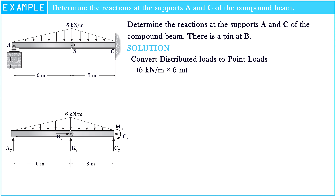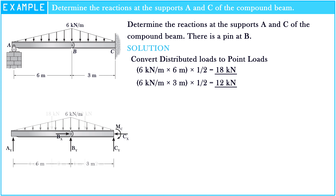6 kN per meter multiplied by 6 meters multiplied by one-half is equal to 18 kN. 6 kN per meter multiplied by 3 meters multiplied by one-half is equal to 12 kN. As we know from the effective force and load centroid of the triangular distribution loads, the point load is located one-third of the distributed length away from the peak. So here we have the locations of the point loads.